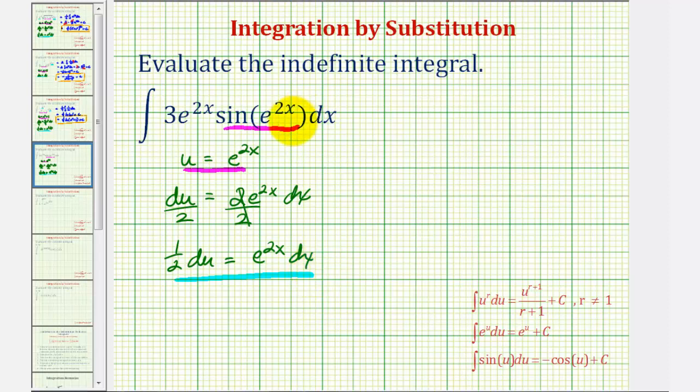Using this equation, we can perform a substitution for e to the 2x dx and factor out the 3. Now we'll write this in terms of u, factoring out the 3.